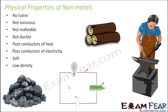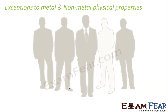Nonmetals are comparatively soft when compared to metals and have lower density. Metals like iron or copper are extremely heavy and dense, but nonmetals are not. Most metals are solids; nonmetals are mostly gases or solids. The only exception is bromine, which is a nonmetal but exists as a liquid.